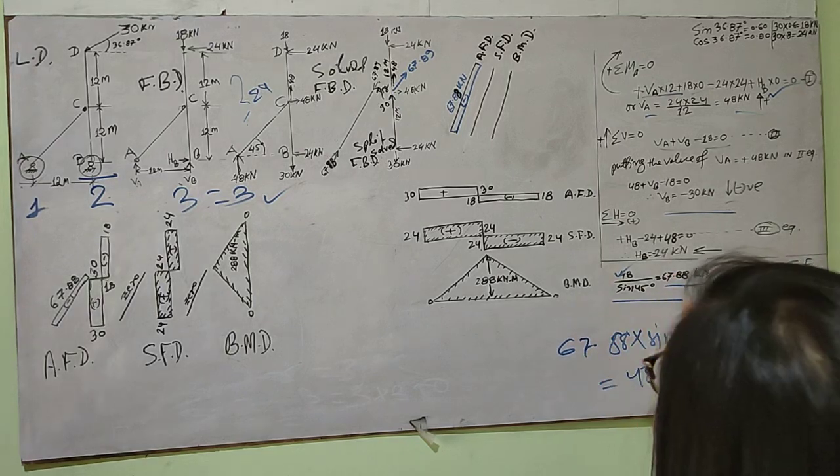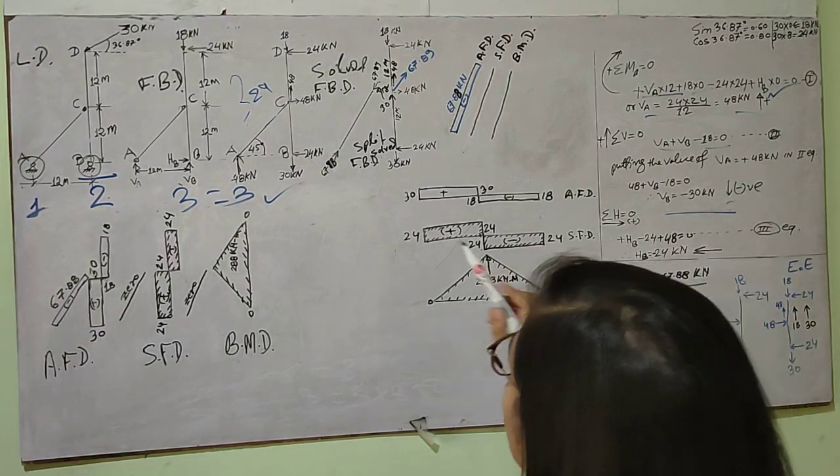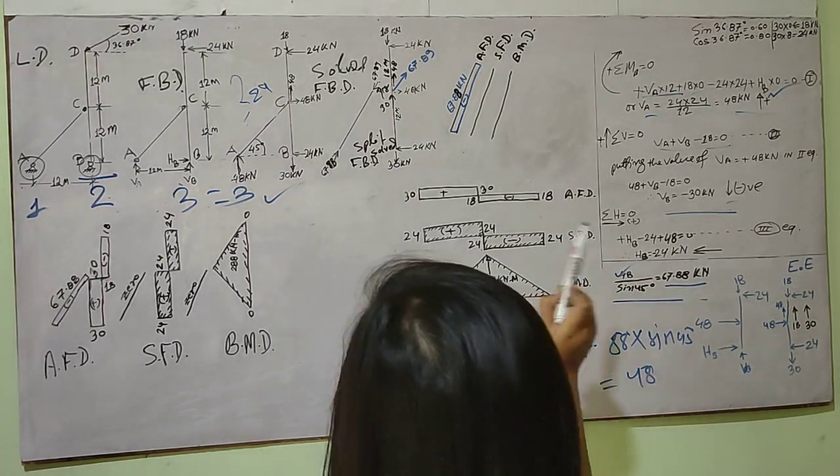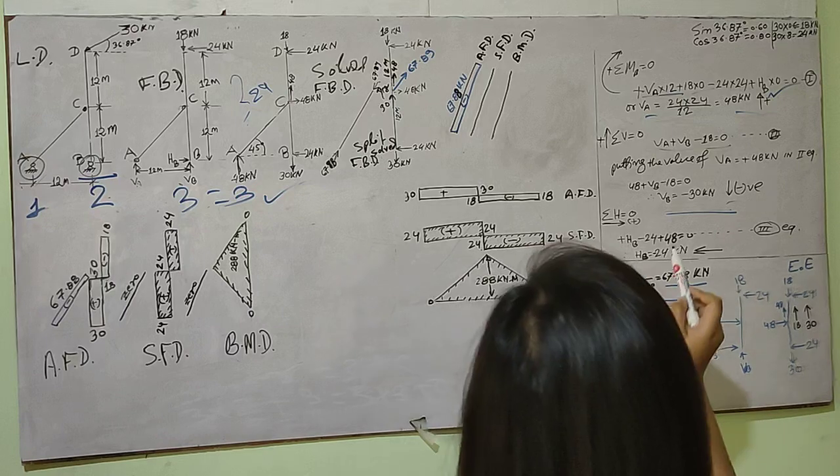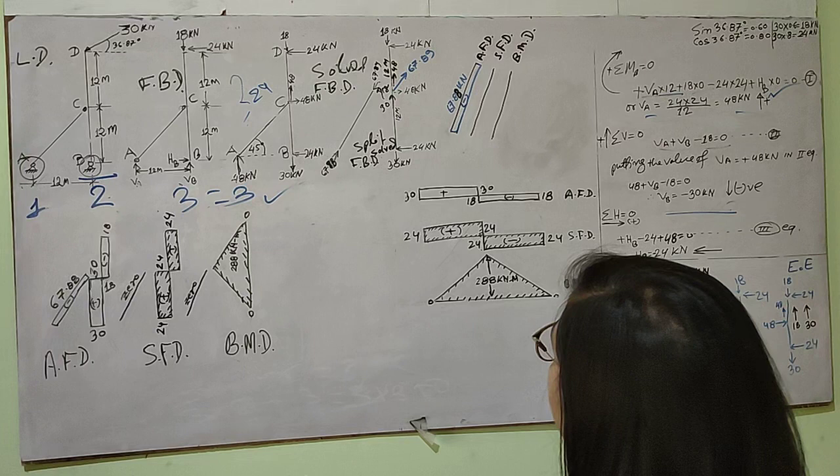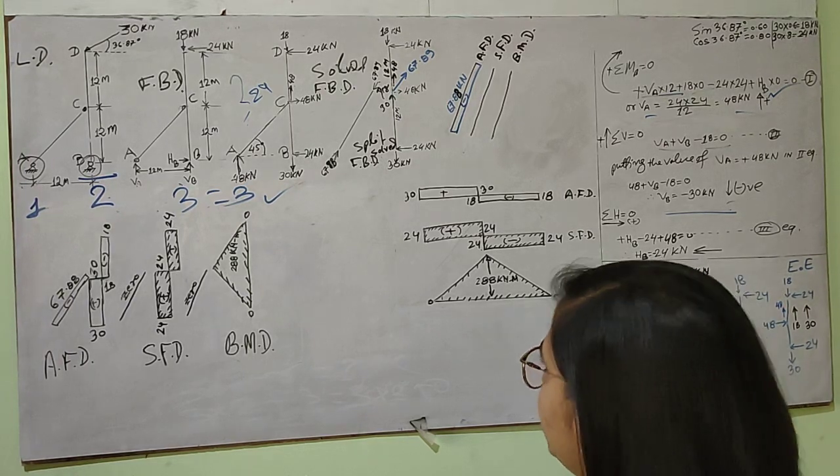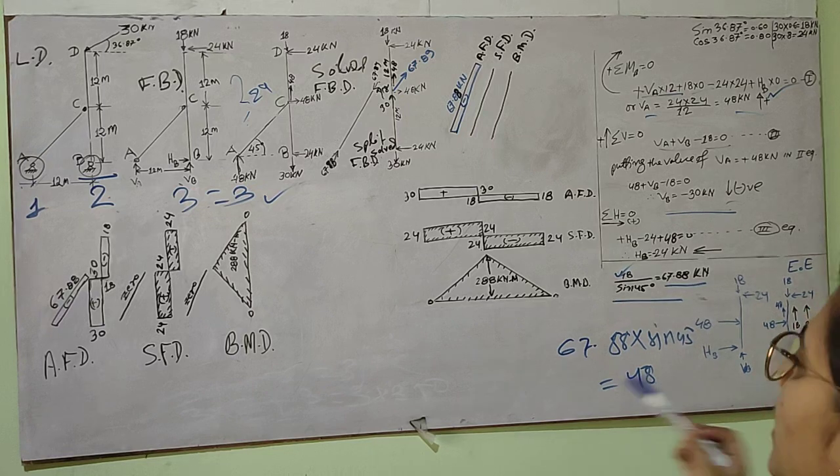In order to find HB, I'll take Sigma H equals zero. So HB is acting rightward, that is positive, minus 24 leftward which is negative, plus 48 acting rightward positive. I get the value of HB as minus 24 kilonewtons, which is negative. So our assumption is not correct - 24 kilonewtons will act towards the left side.